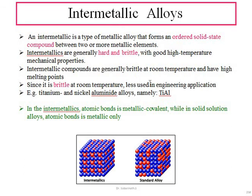As a result of this internal stress, intermetallic compounds exhibit hardness, brittleness, and good high-temperature mechanical properties. They are generally brittle at room temperature and have very high melting points. Because of this brittleness at room temperature, they are not widely used in engineering applications at room temperature.